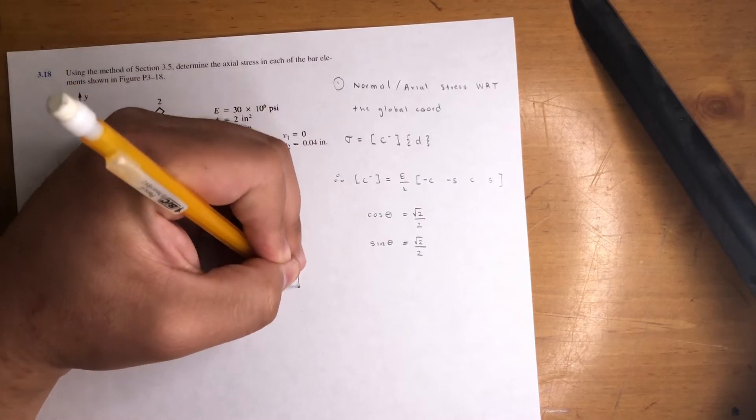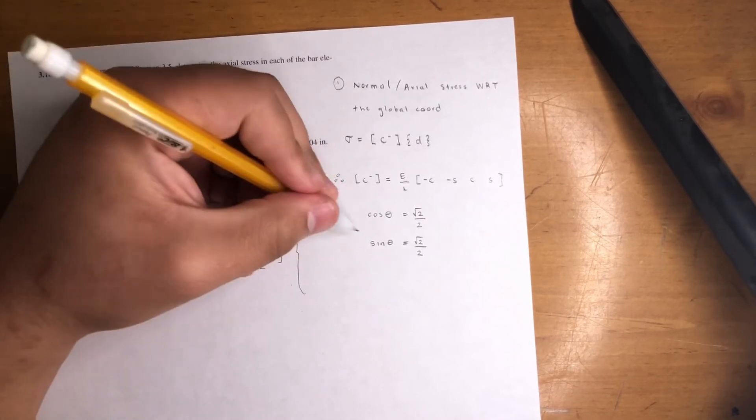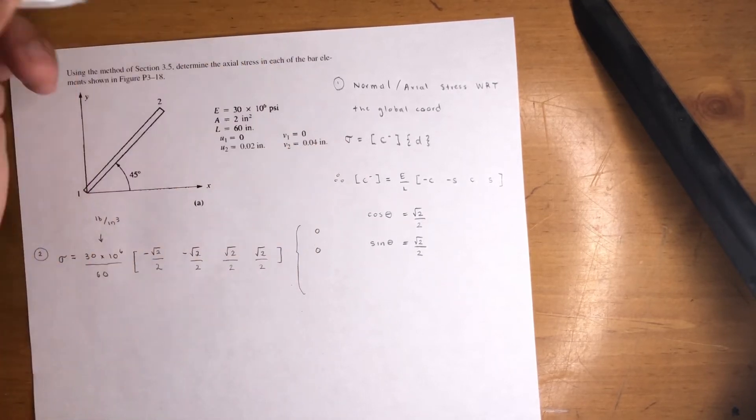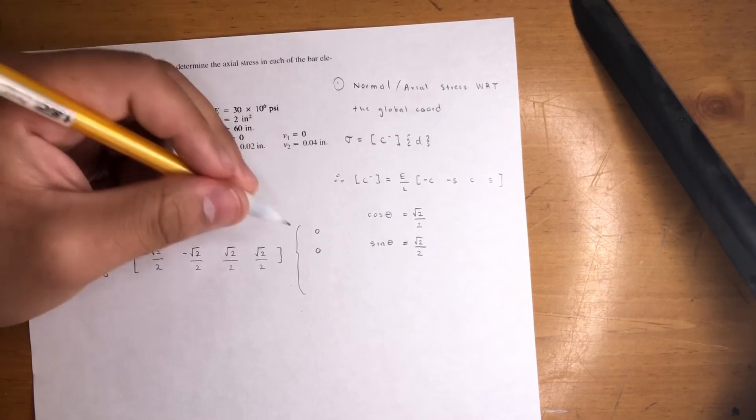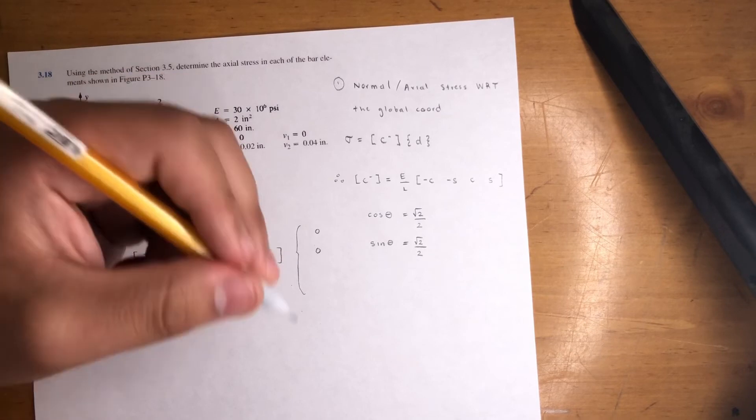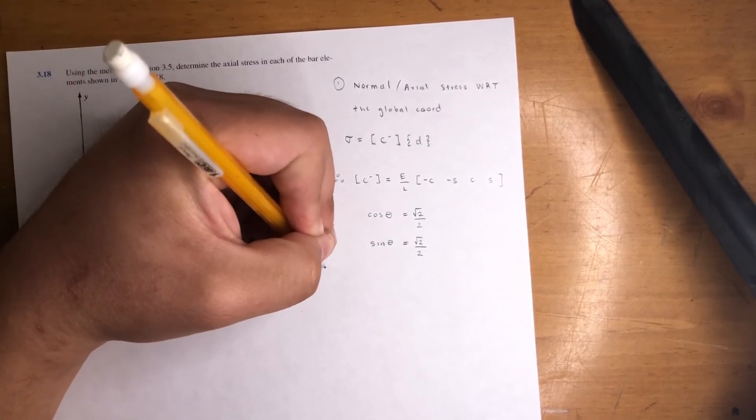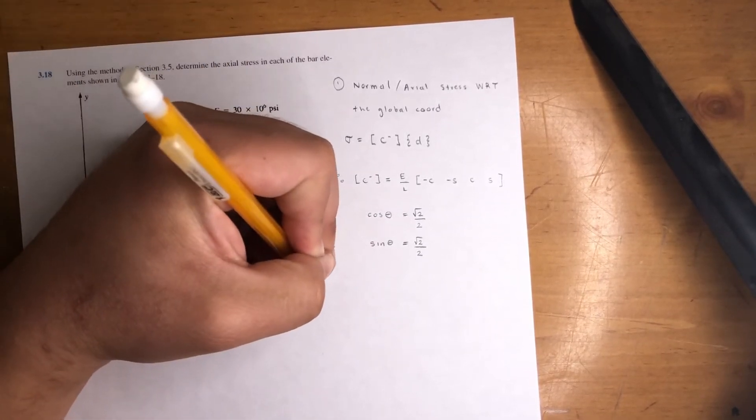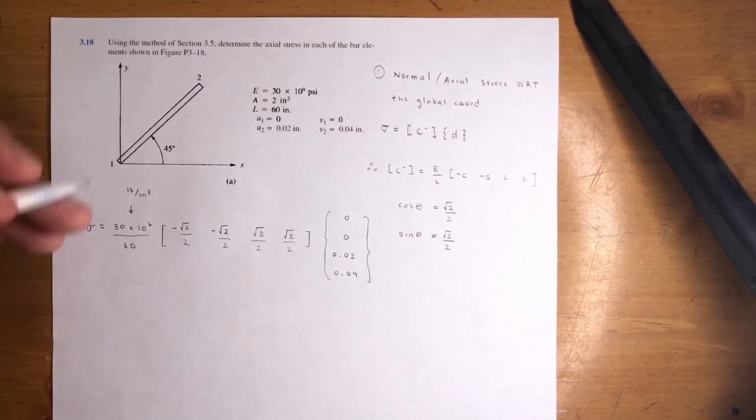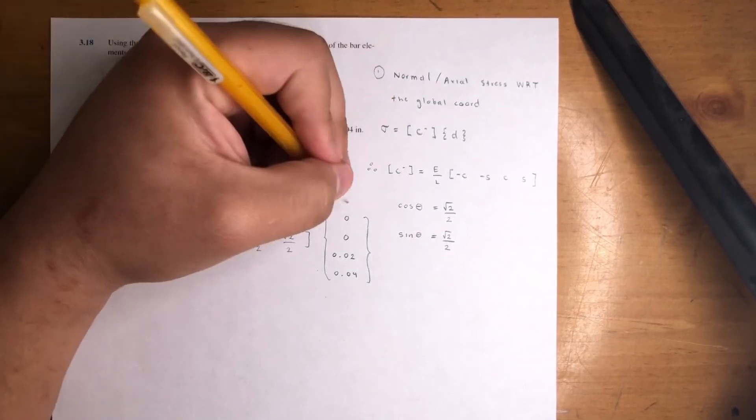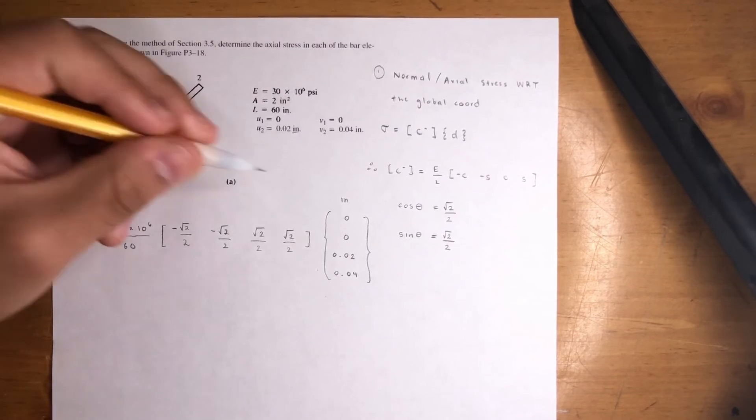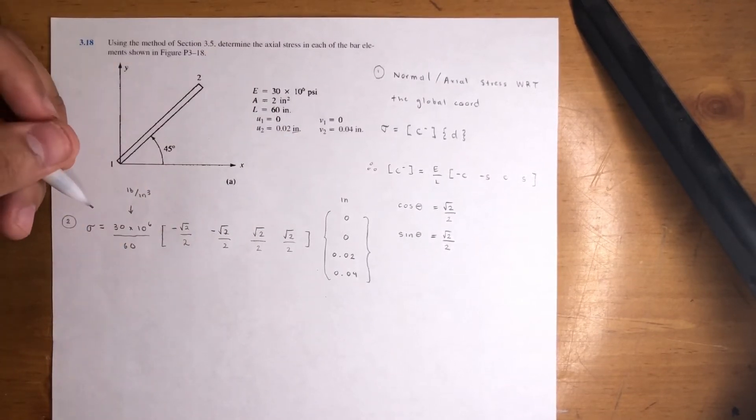And then your displacement vector is going to be U1, V1. Make sure you know how to write it out: U1, V1, then U2, V2—not U1, U2, V1, V2. You usually do it by nodes: first node, second node, third node, et cetera. So it's 0, 0, 0.02, 0.04. This is in inches. When you multiply pound over inch cubed times an inch, you're going to get stress: pound over inch squared.